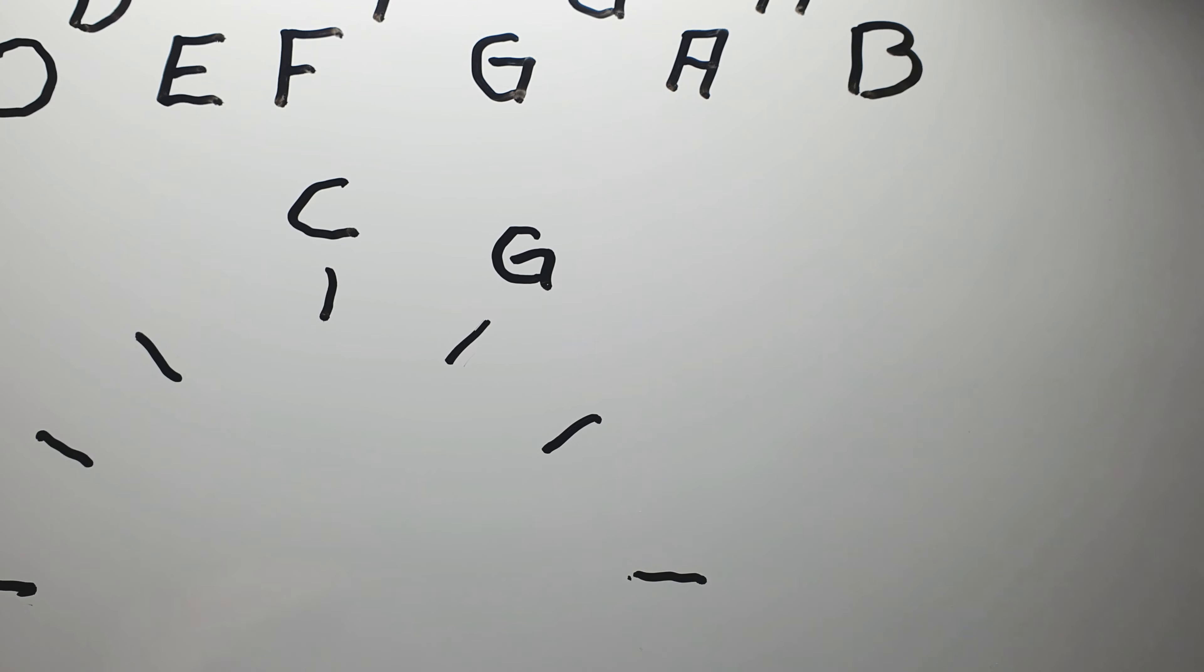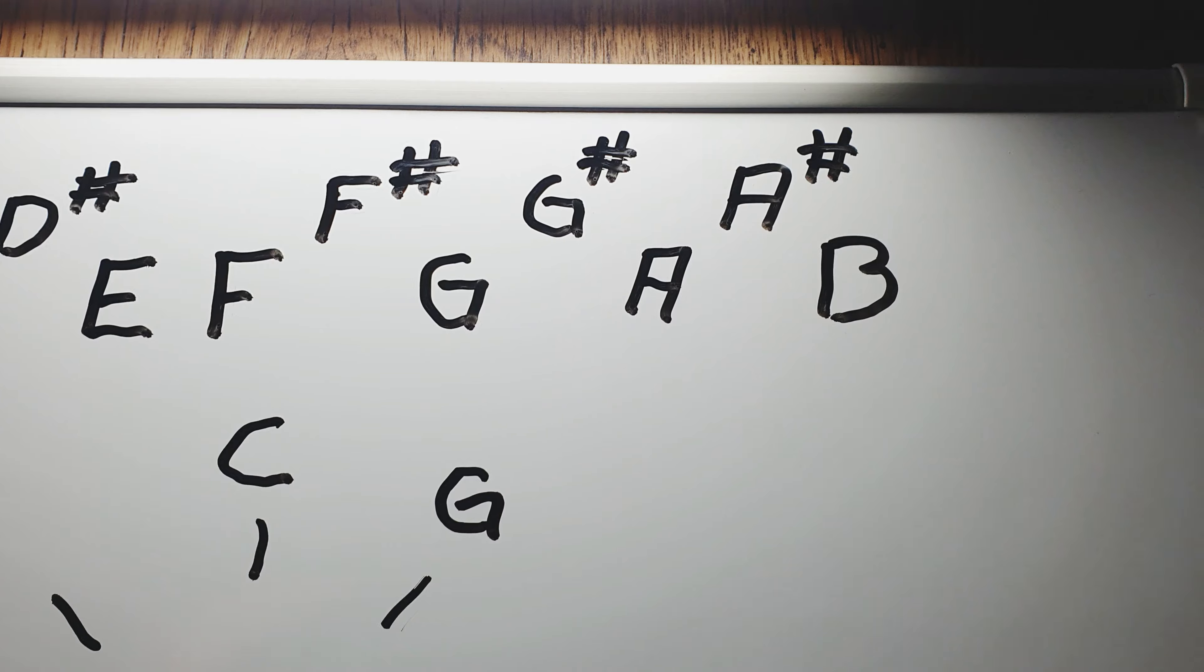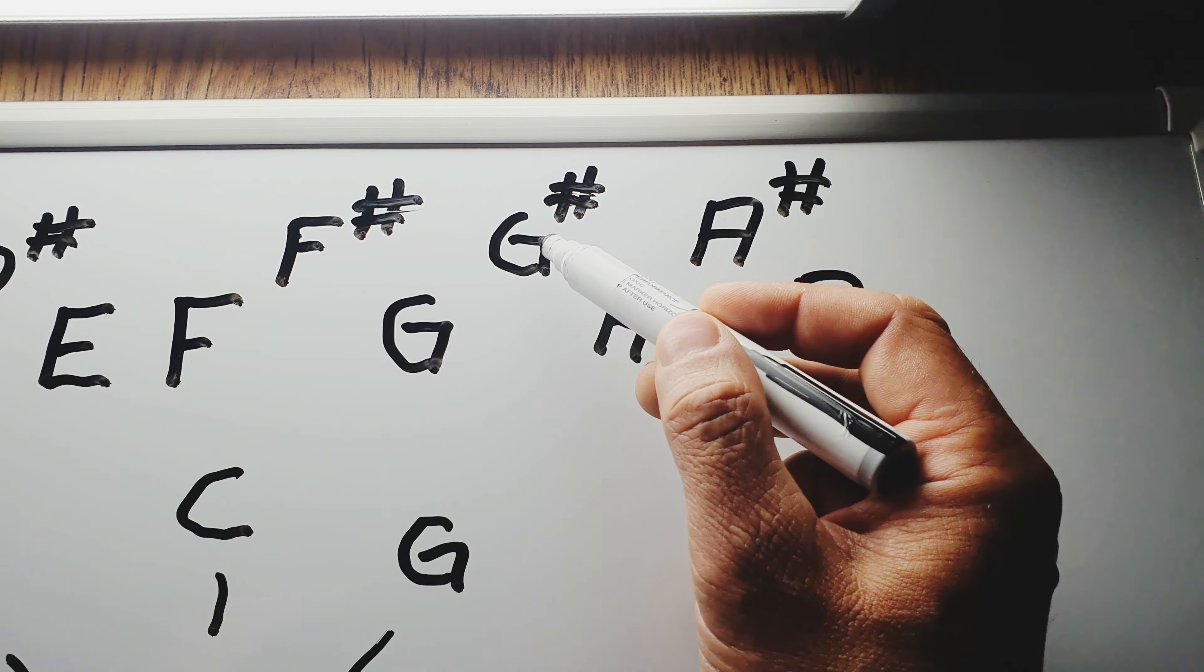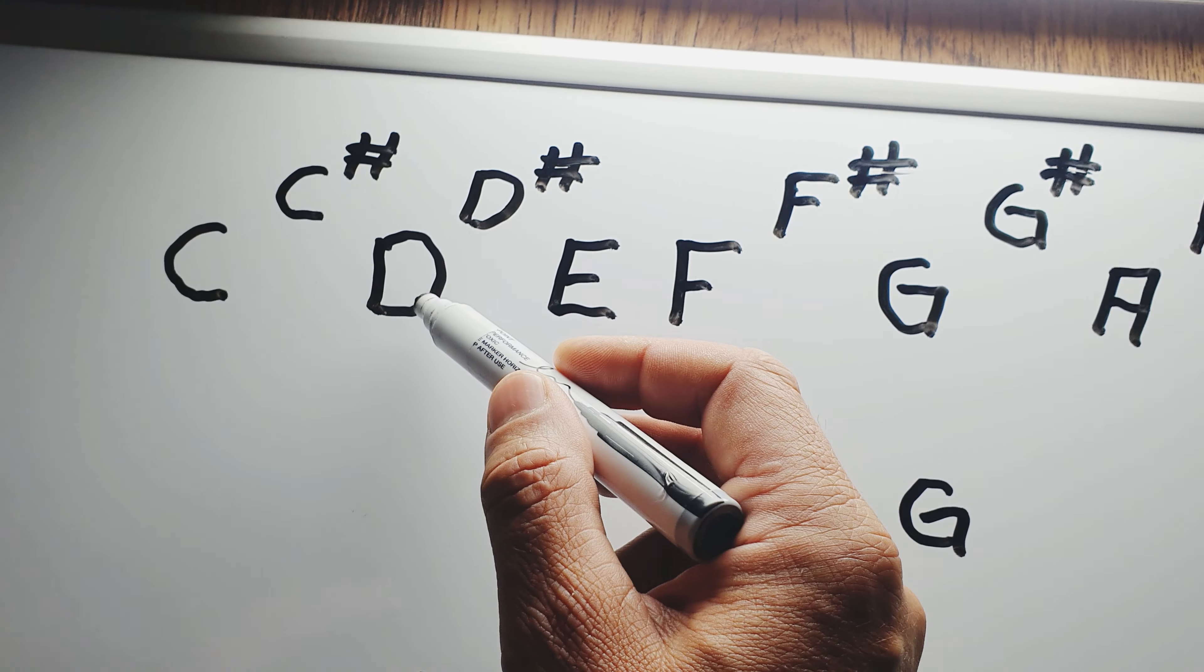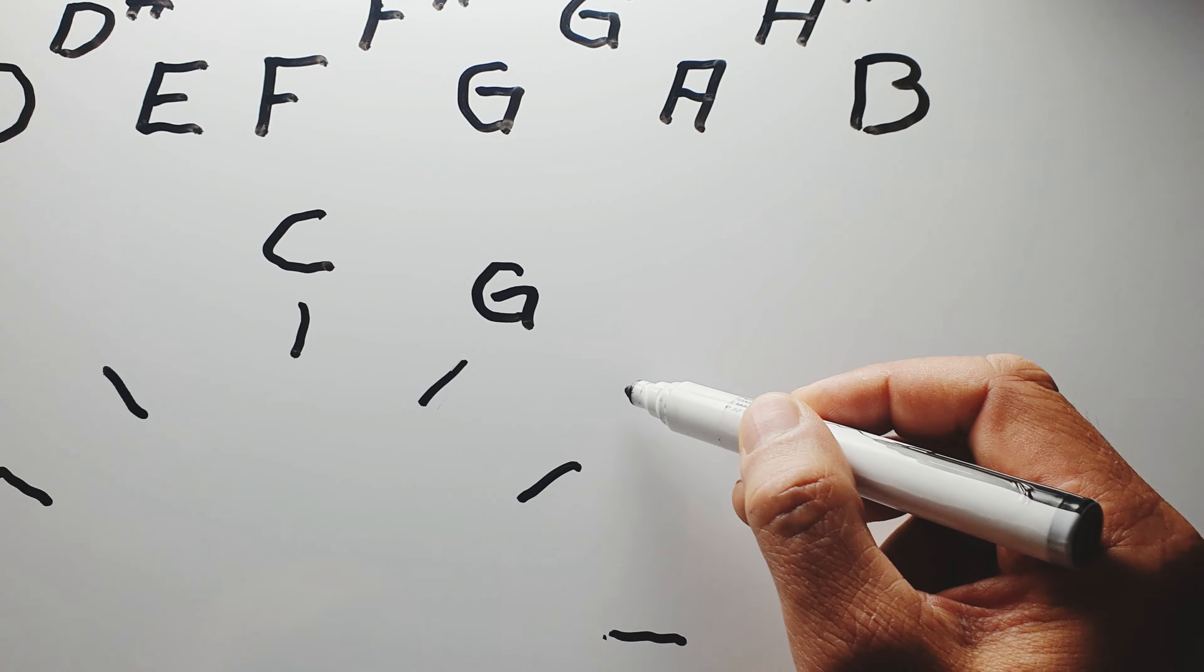And now we will find the fifth to the G: 1, 2, 3, 4, 5, 6, 7. A D. And we put that on two o'clock.